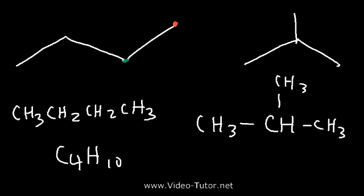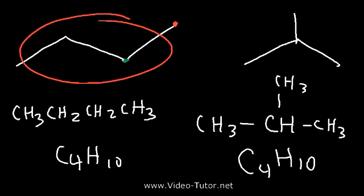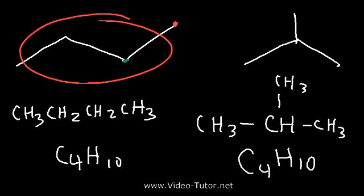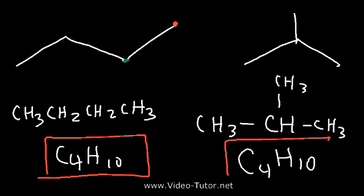Notice that it has the same chemical formula, C4H10 — four carbons, ten hydrogens. So as you can see, these two compounds are constitutional isomers. They have the same exact chemical formula but the structure is different. The way the carbon atoms are connected is different.